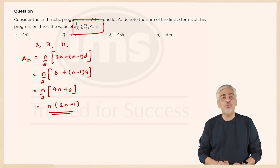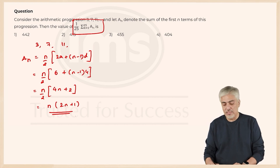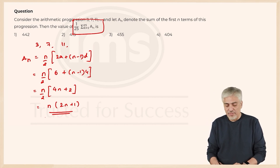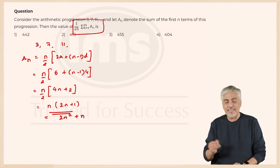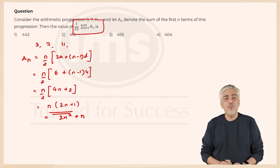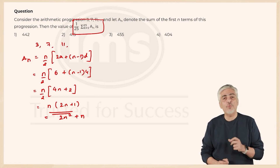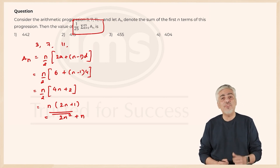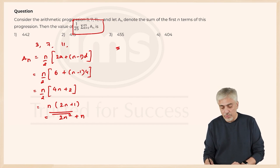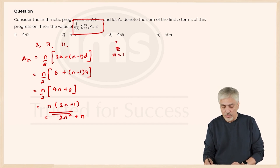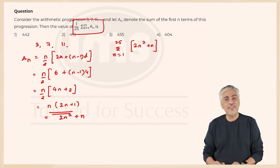So we are left with aₙ = n(2n + 1), which simplifies to 2n² + n. We want the summation of this for the first 25 terms: Σ(2n² + n) for n = 1 to 25. This is where I thought the question was difficult, because we need the formula for the sum of squares.